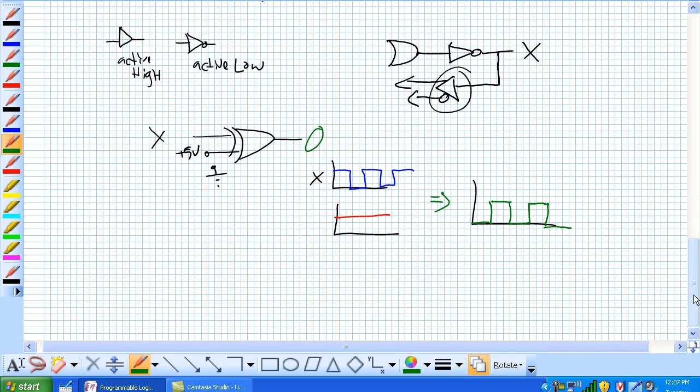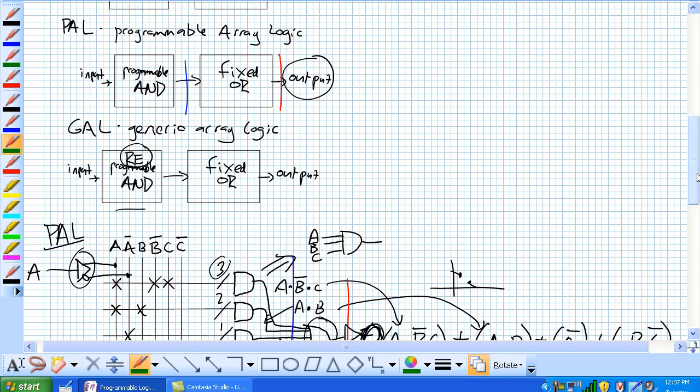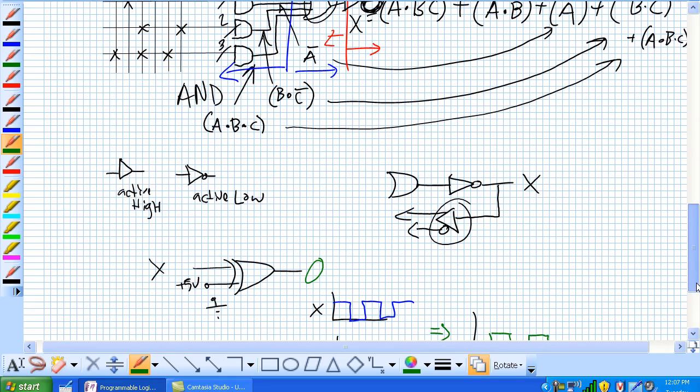So the GAL, let's talk about this here. The only thing different between a GAL and a PAL is, well, the big thing is this reprogrammable AND array, and then our output is slightly different too, output logic is slightly different.